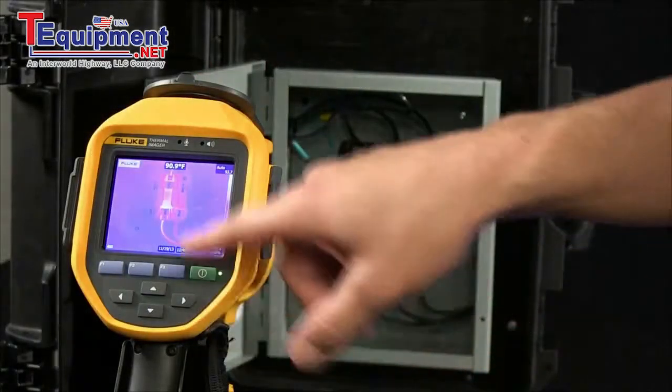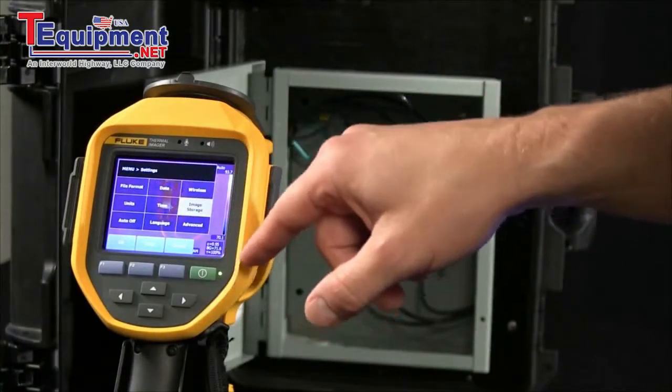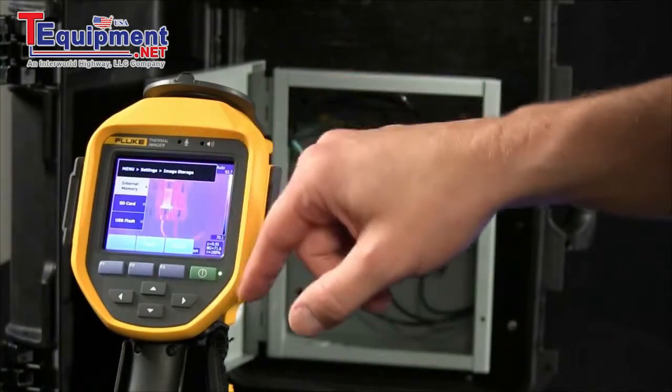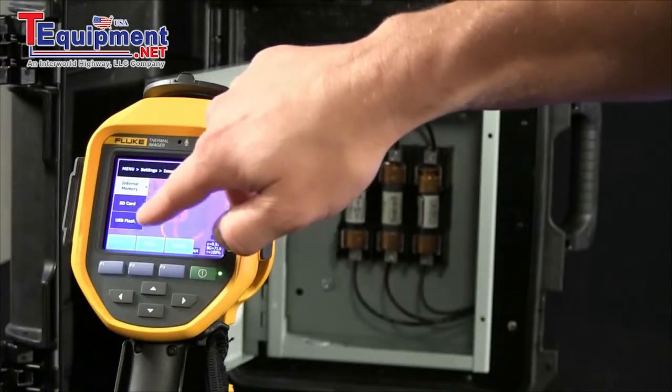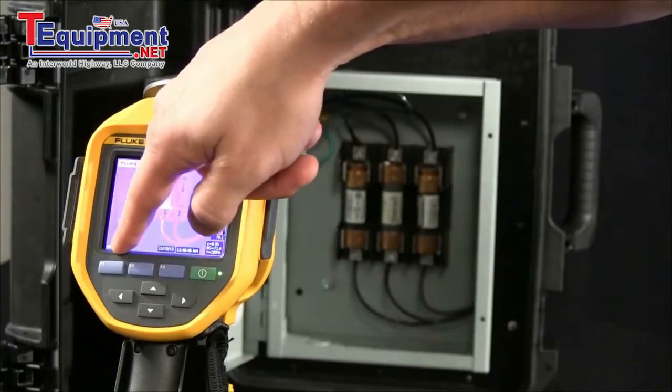So the first thing I want to do is set up a memory location where I'm going to store my images. I want to store them on the micro SD card here, noted as the SD card. I'll press that and select done.